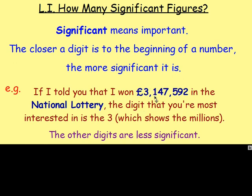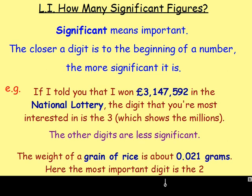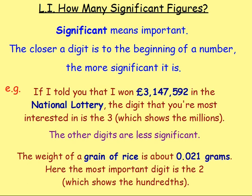After that, you would have the second significant figure, which would be the 1. Then you'd have the third significant figure, then the fourth, and so on, working your way down in terms of significance. Another example: if I told you the weight of a grain of rice is about 0.021 grams, what is the most significant figure? It's not the 0, because that would just be nothing and would show you nothing. The most important digit is actually the 2 — it's the first non-zero digit, because this shows you that there are two hundredths. And that is what you're interested in. Beside it with the 1, that's the next significant number.